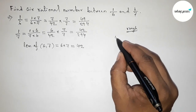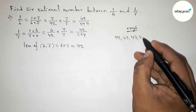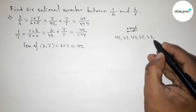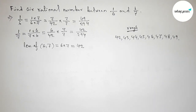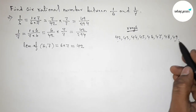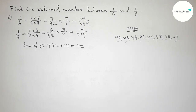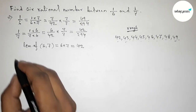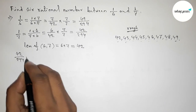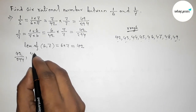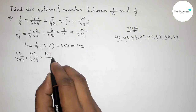Now both denominators are the same. Between 42 and 49 we can get 6 integers — 43, 44, 45, 46, 47, 48 — and by these 6 integers we can form 6 rational numbers. So writing down all the rational numbers: first one is 42 by 294, then 43 by 294, 44 by 294, 45 by 294.